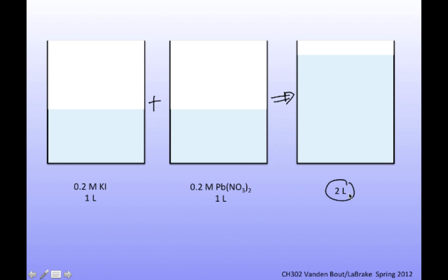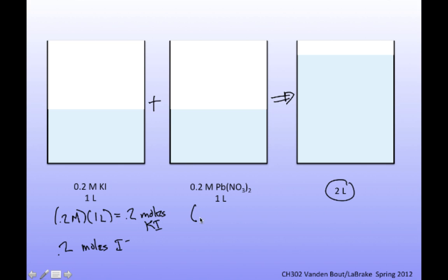To determine concentration in the final volume, I need to know the number of moles of the species of interest. A 0.2 molar solution of potassium iodide gives 0.2 moles per liter times one liter, which is 0.2 moles of KI. Since for every one mole of KI I get one mole of I⁻, I have 0.2 moles of I⁻. Similarly, 0.2 molar lead nitrate times one liter gives 0.2 moles of lead nitrate, meaning 0.2 moles of Pb²⁺ ions.